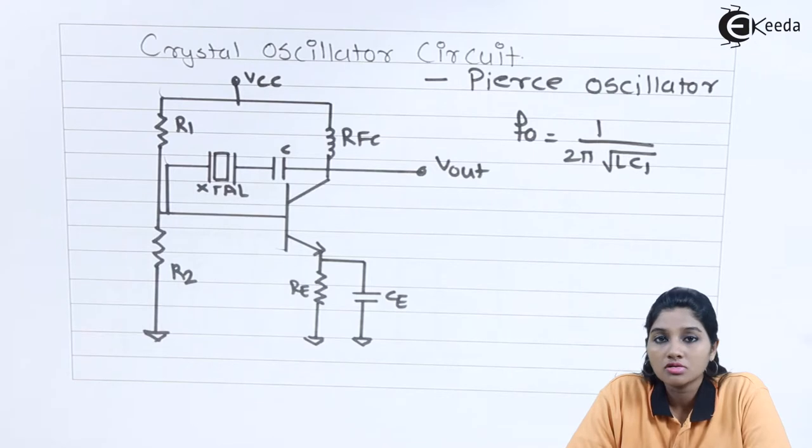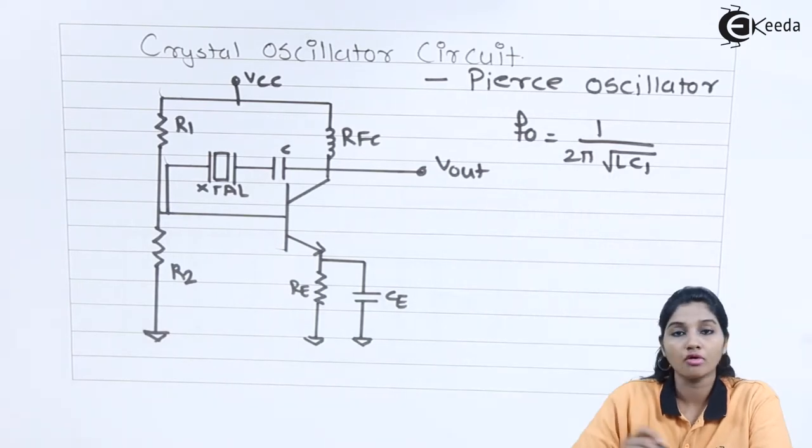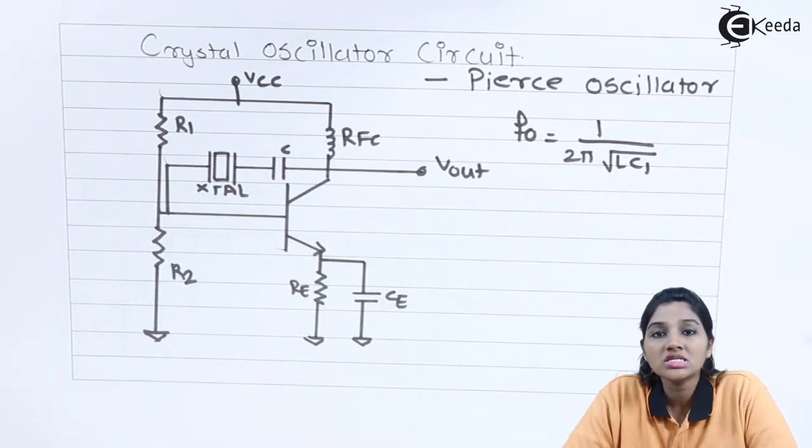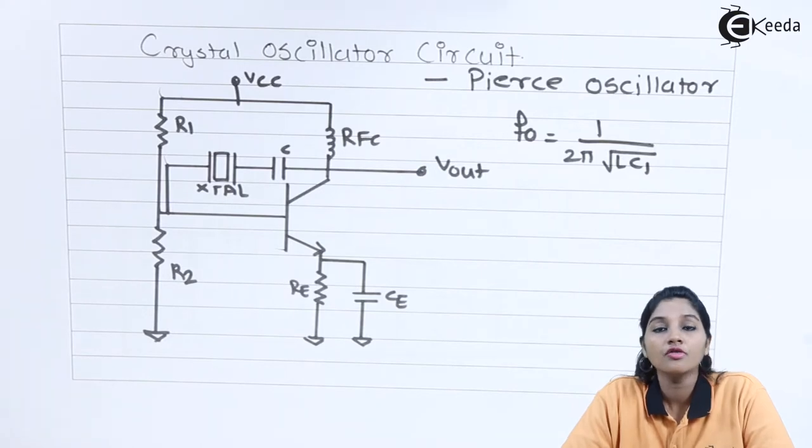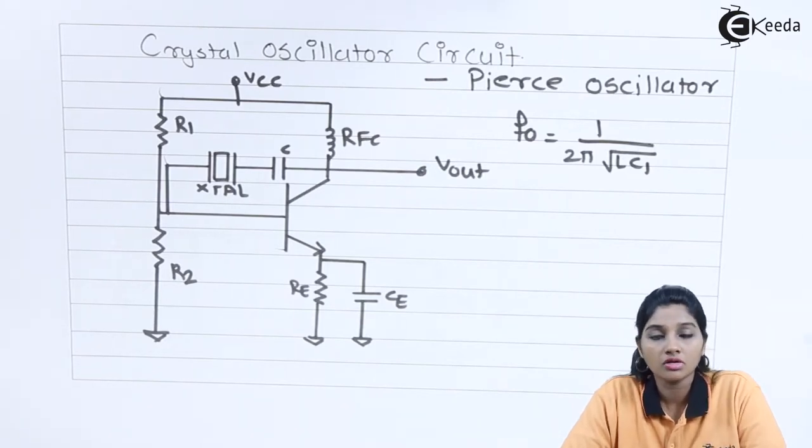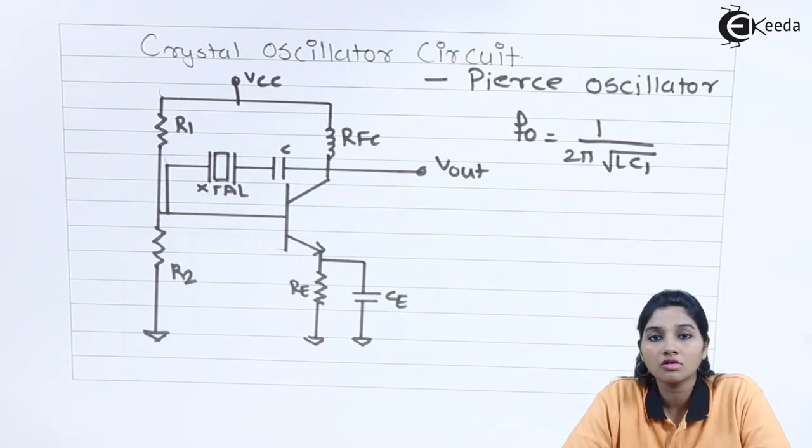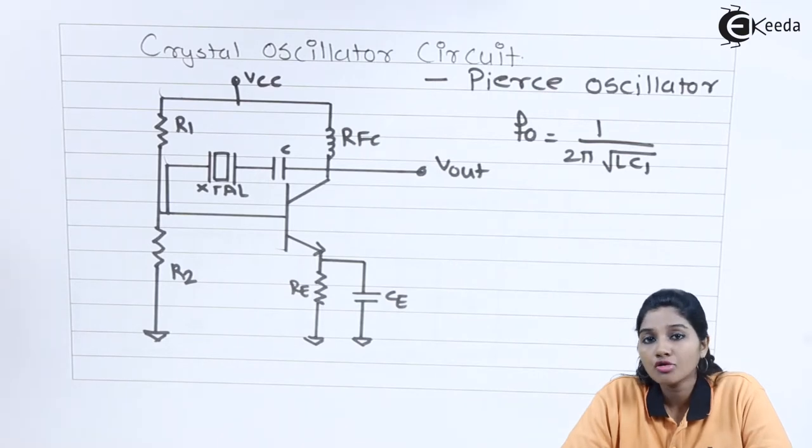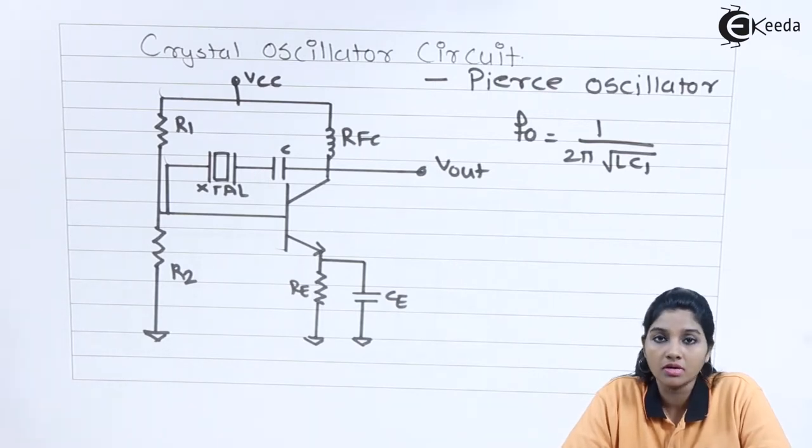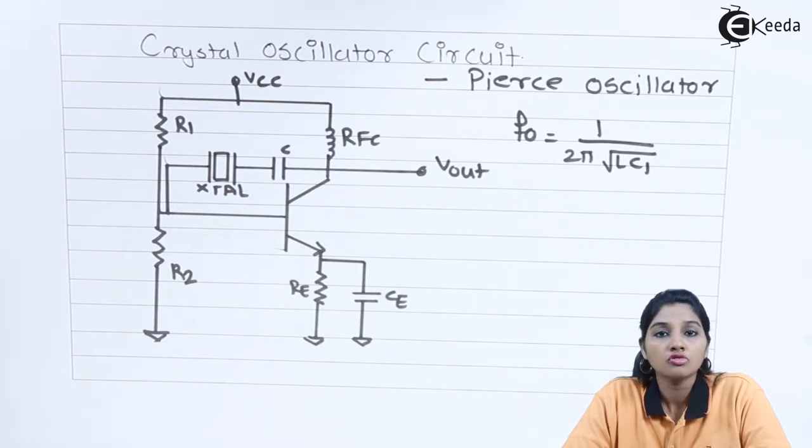Now in case of Pierce crystal oscillator, the frequency of oscillation is given by the formula: f0 is equal to 1 upon 2π square root of LC1. Here we are considering series resonant frequency that is most commonly used in the applications. In case of series resonant frequency, if we consider the electrically equivalent circuit of crystal oscillator, then the electrically equivalent circuit consists of one branch having series connection of RLC1 which is connected parallelly with the other branch which consists of only capacitor. When reactance of inductor is equal to reactance of capacitor C1, then it provides series resonant frequency. The frequency at which the maximum vibration occurs is called as resonant frequency.